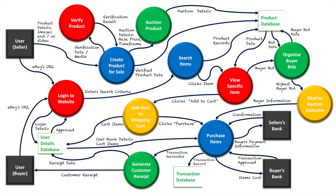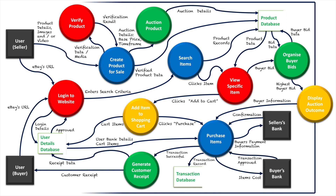The highest bidder has the opportunity to purchase the product. The system notifies both the buyer and seller of the auction outcome — for the buyer it might mean they didn't get the product, but in the case where they did win, they were the highest bidder and can purchase it. The seller can see what the highest bid was and, essentially, how much they're going to be paid for that product.